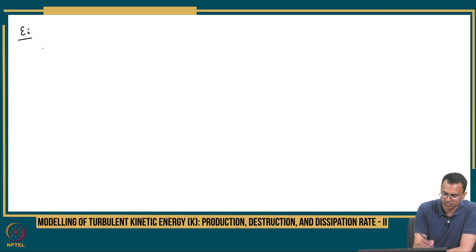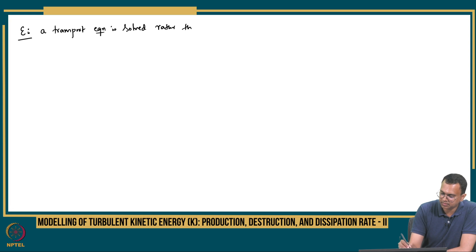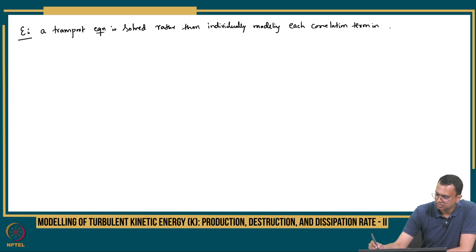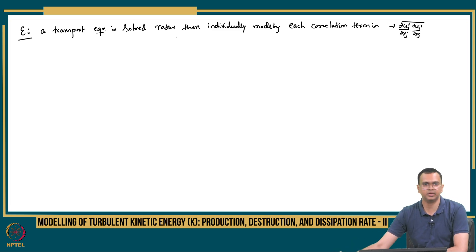For the epsilon term, a transport equation is solved. Rather than individually modeling each correlation term in ν (∂u'_i/∂x_j)(∂u'_i/∂x_j), we need a transport equation for it — something that has not been discussed in the theory so far.